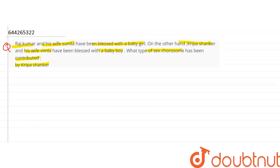The question is that Rajkumar has two cases. Rajkumar and his wife Sunita who have a baby girl, and the second case will be Kripa Shankar with Vimla.